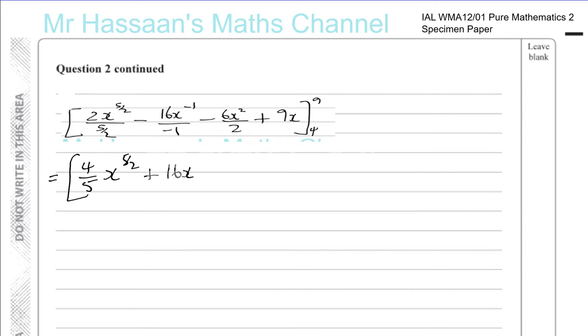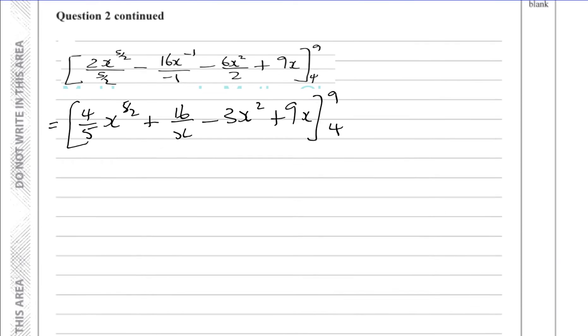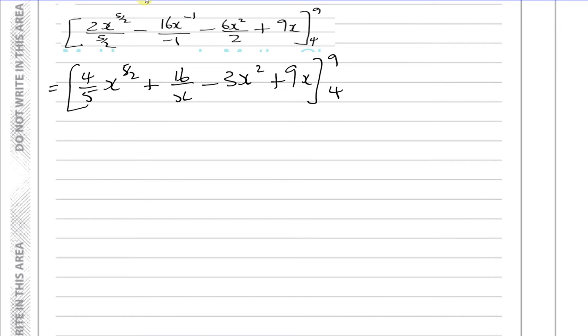So this is like 2 fifths times 2 which is going to be 4 fifths times x to the power of 5 over 2. This is going to become a minus divided by minus is plus 16x to the power of minus 1 which you can actually write better as 16 over x to the power of 1 which is 16 over x. And this is going to be 6 divided by 2 which is 3x squared. And this 9x is fine.